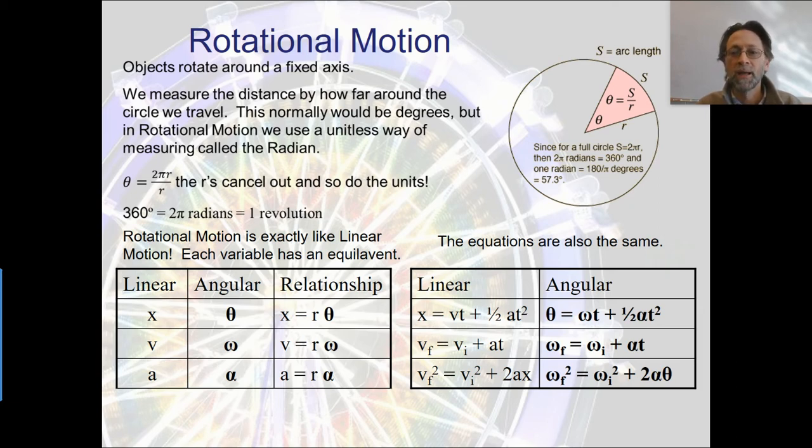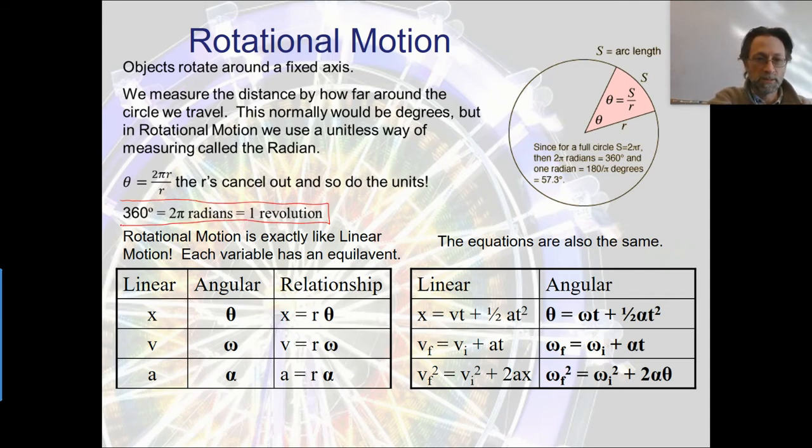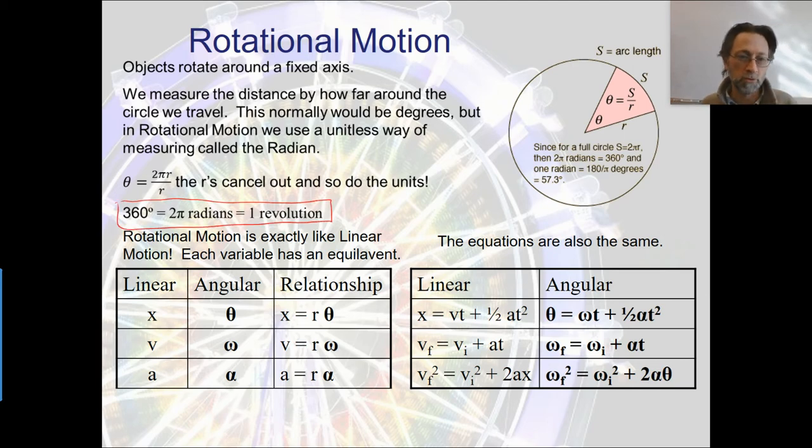Remember that one trip around the circle will be 2πr, and the ratio of that 2πr to r is the theta value or the radians that we would have. So one important value that you would want to remember is 360 degrees is the same as 2π radians, which is the same as one revolution.